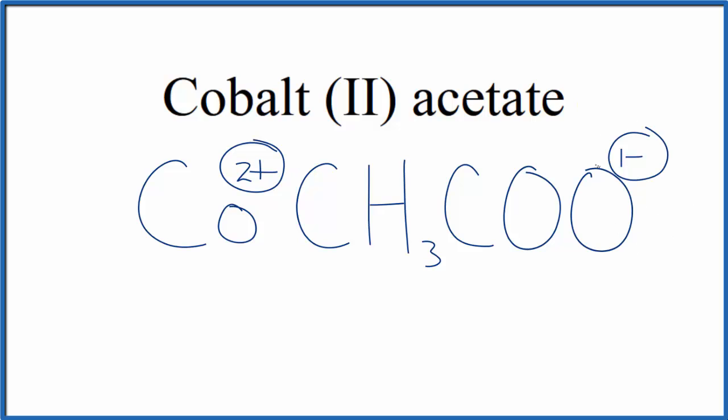So we have 2+ and 1-. If we had two of these acetate ions here, 2 times 1-, that would balance out the 2+. We would need to put parentheses around the acetate ion, though.